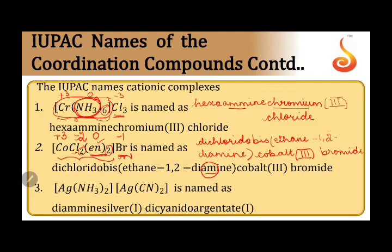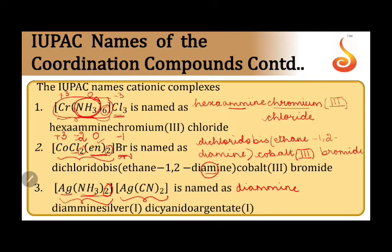In the next IUPAC nomenclature example, we have two coordination spheres. It is clear that the one written on the left hand side must be positive and the one on the right should be negative. First, we will name the cationic coordination sphere. Following the same rule — first ligands, then central metal — two ammonia ligands give us diammine.